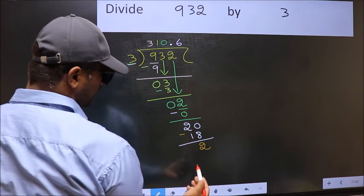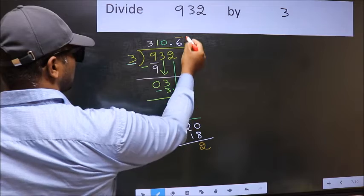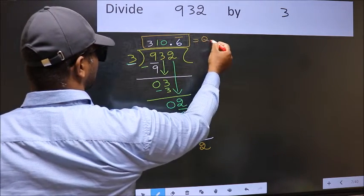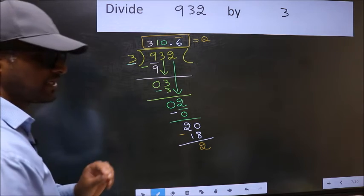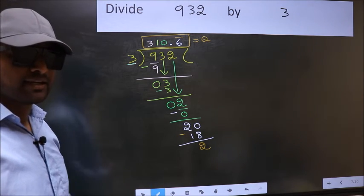We got 2 again. That means we get bar on this number. So this is our quotient. Did you understand where the mistake happens? You should not do that mistake.